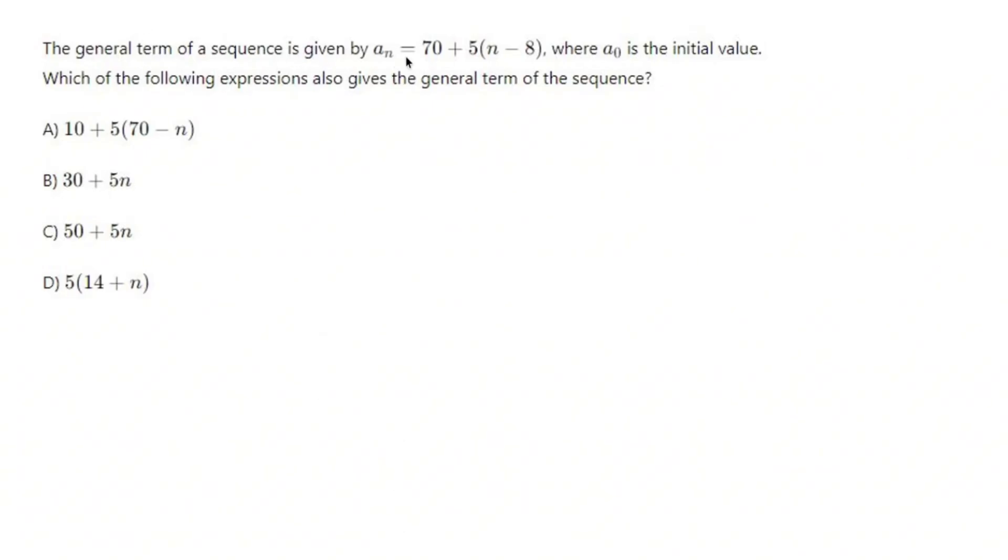The general term of a sequence is given by a sub n equals 70 plus 5 times the quantity n minus 8, where a sub 0 is the initial value. Who cares? Which of the following expressions also gives the general term of the sequence?